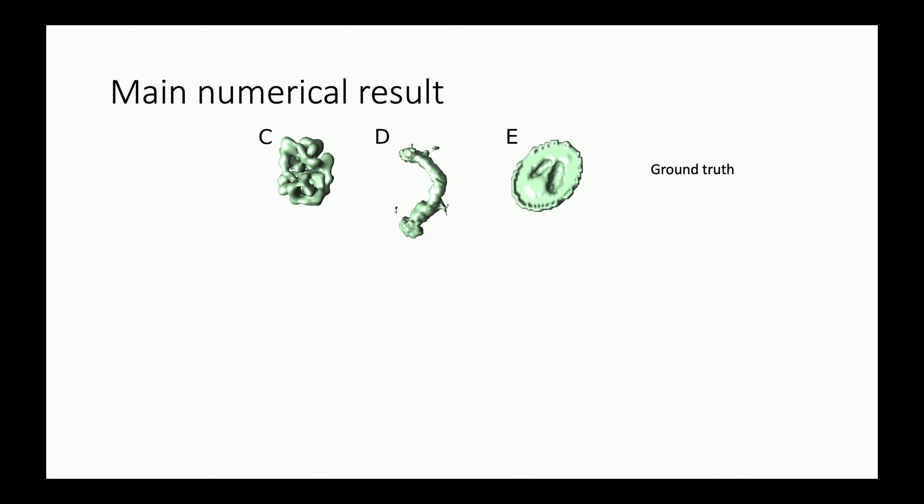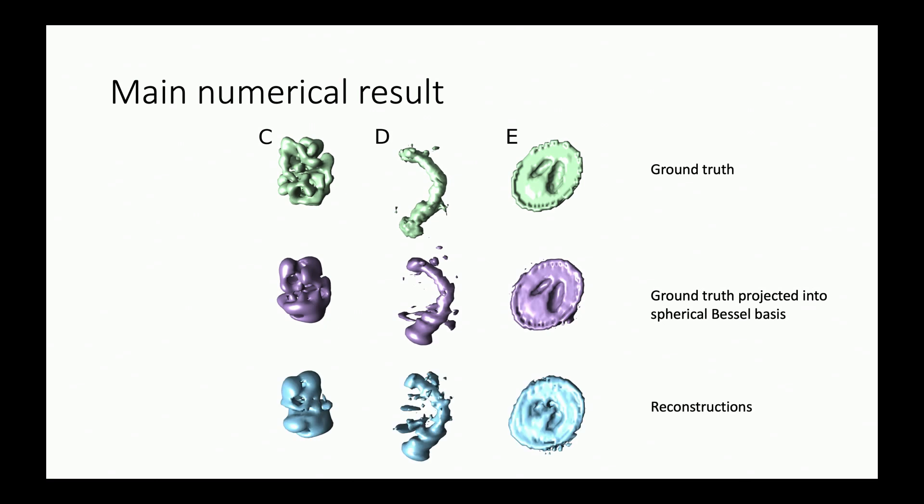We implemented this. These are our ground truth structures. C and D correspond to molecules in PDB. And E is Shepp Logan Phantom. Here I'm showing these ground truths, these green ground truths, but projected down to our bases. We've only expanded these up to some finite band limit. This is what you get in that expansion for the spherical Bessel. Sort of the best we could hope for because we are only trying to find the expansion coefficients is these purple guys. And this is what the algorithm retrieves. So it's certainly not an exact reconstruction. But it's achieving sort of the general shape of the purple structures.